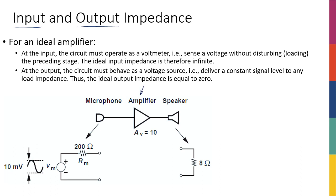Let's say that we have a microphone and we want to amplify the signal coming out of it — likely a small signal — and then play it on a speaker. We have designed this amplifier to have a gain of 10, so when you speak into the microphone it generates a signal proportional to the volume of your sound, and those ups and downs are amplified by a factor of 10 and played by the speaker.